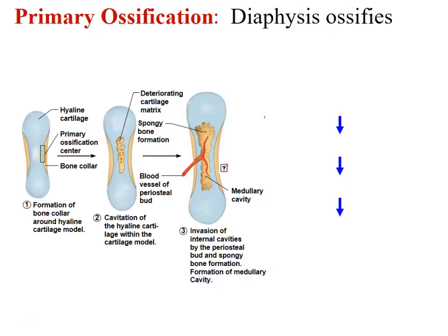Looking at a long bone, we see a cartilage model that's formed. What type of bone formation is this — endochondral or intramembranous? We're looking at a long bone, so the answer is endochondral. How do we know that? Because we're looking at cartilage.